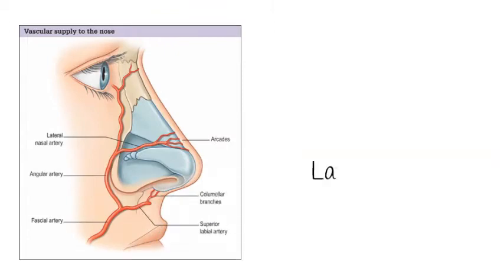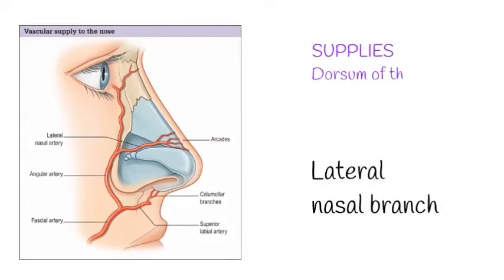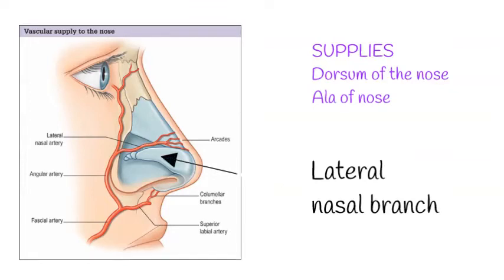The lateral nasal artery ascends along the side of the nose and supplies the ala and dorsum of the nose.